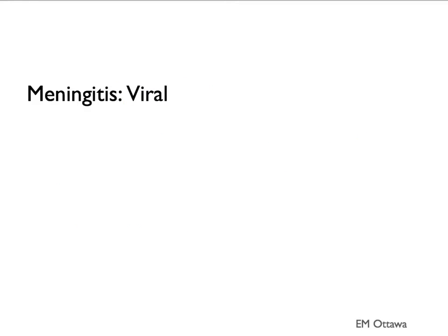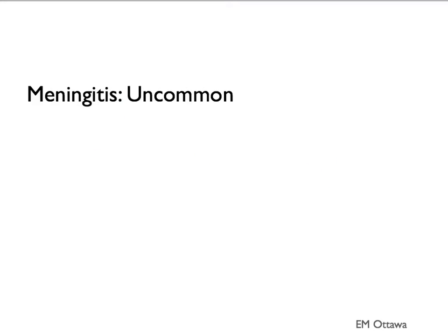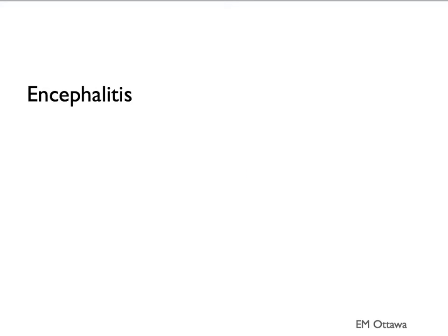Viral meningitis is usually caused by enterovirus and HSV, or the herpes simplex virus. Other causes of meningitis include TB, Lyme disease, and others. Encephalitis is usually caused by viruses, including the herpes simplex virus, varicella zoster virus, measles, and others.